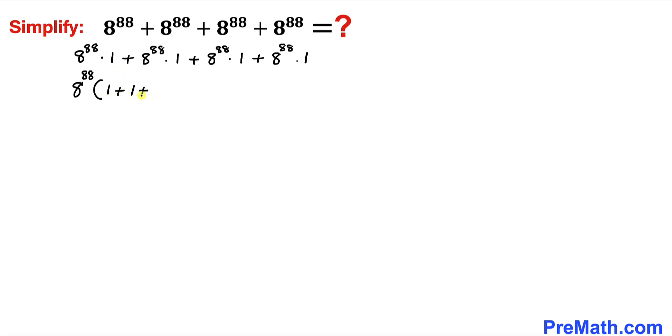Inside parentheses we are left with 1 + 1 + 1 + 1. Inside this parentheses 1 + 1 + 1 + 1 is going to give us 4, so therefore we can write this as 8^88 times 4.